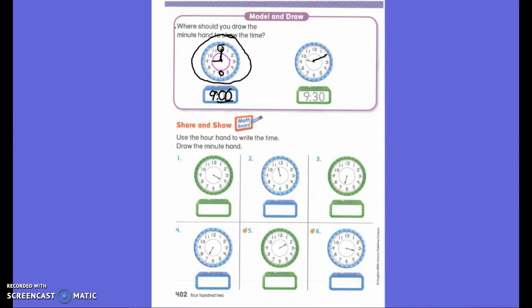What two numbers have we learned that the minute hand is going to point to? The 6 or the 12. The 6 or the 12. Those are your only two options. When I point it to the 12, it says o'clock. When it points to the 6, it says 30. Those are two things we have to remember.